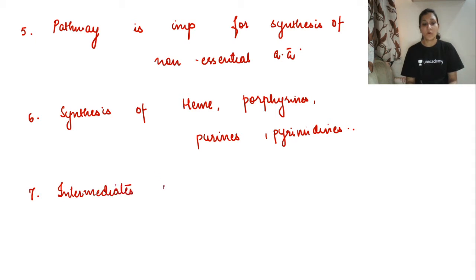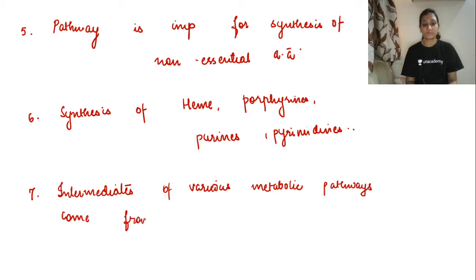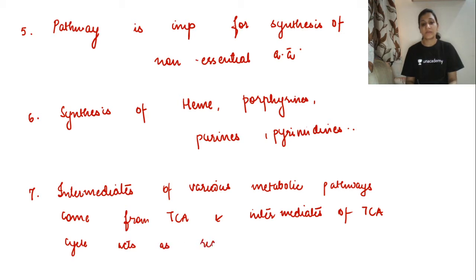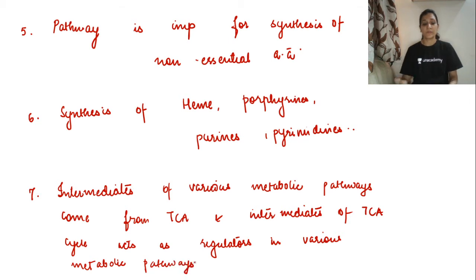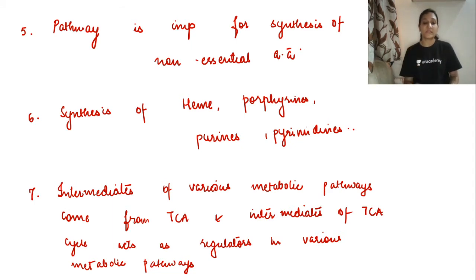Intermediates of various metabolic pathways are derived from the TCA cycle. These are some of the significances of the Krebs cycle. Now we are going to talk about the steps of the Krebs cycle, so pay complete attention.